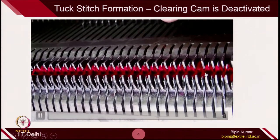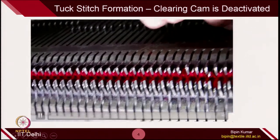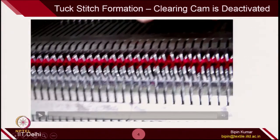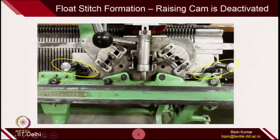Here, some of the loops — you can see there are 2 loops on one of the beds while the other bed has just one loop. For float stitch, the raising cam has to be deactivated. This is the location — you can push this metallic bar inside to make float stitches.